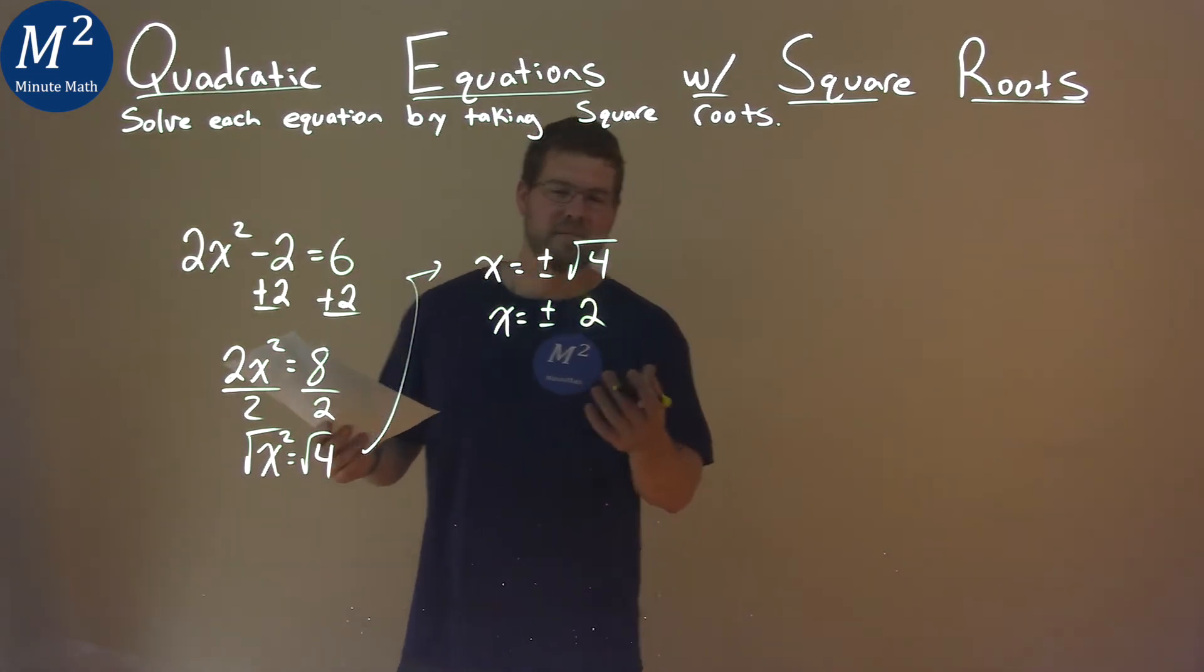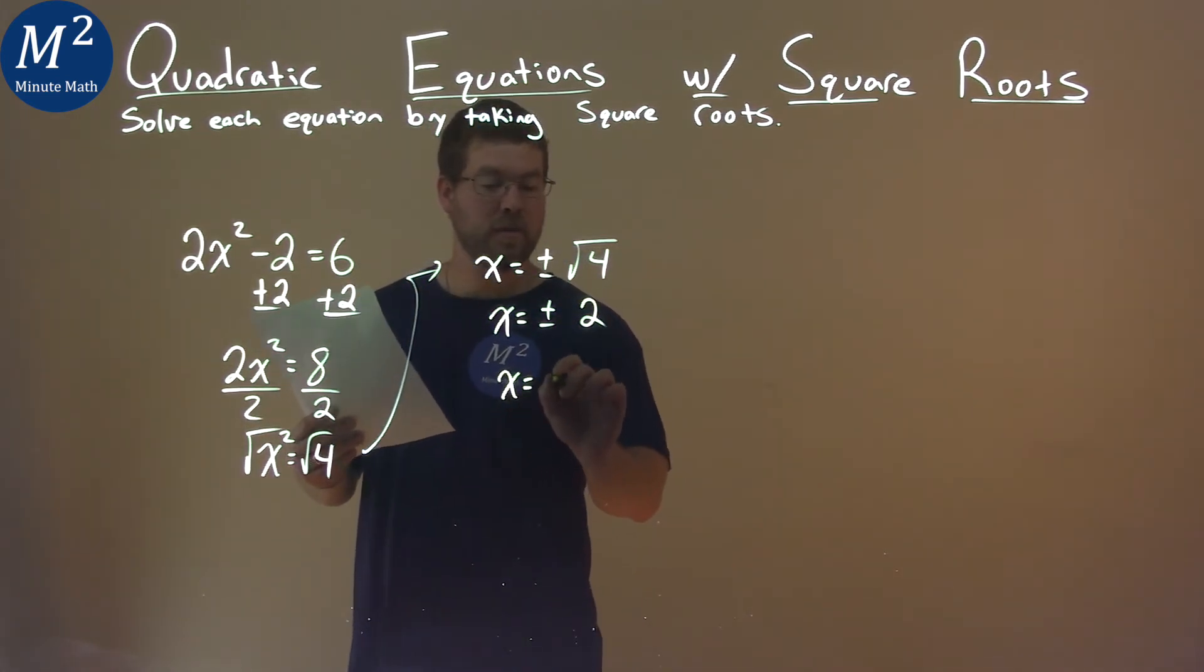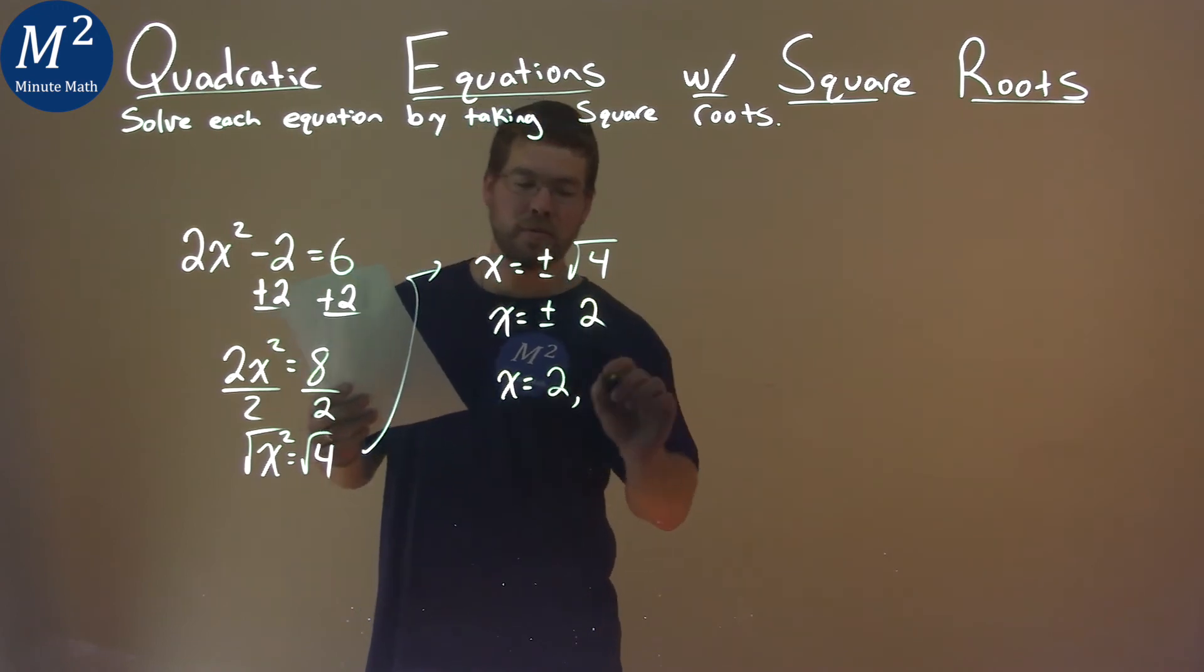Well, not too bad. Plus or minus 2, we can write this to be x equals a positive 2 and x equals a negative 2.